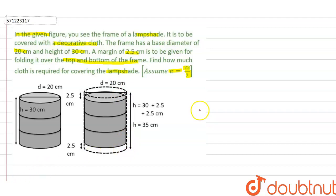So if we find the height of the lampshade, it will be 30 cm as given, and we also have 2.5 cm margin on upper and bottom. So we will add 2.5 cm plus 2.5 cm. The total height of the lampshade will be 35 cm.